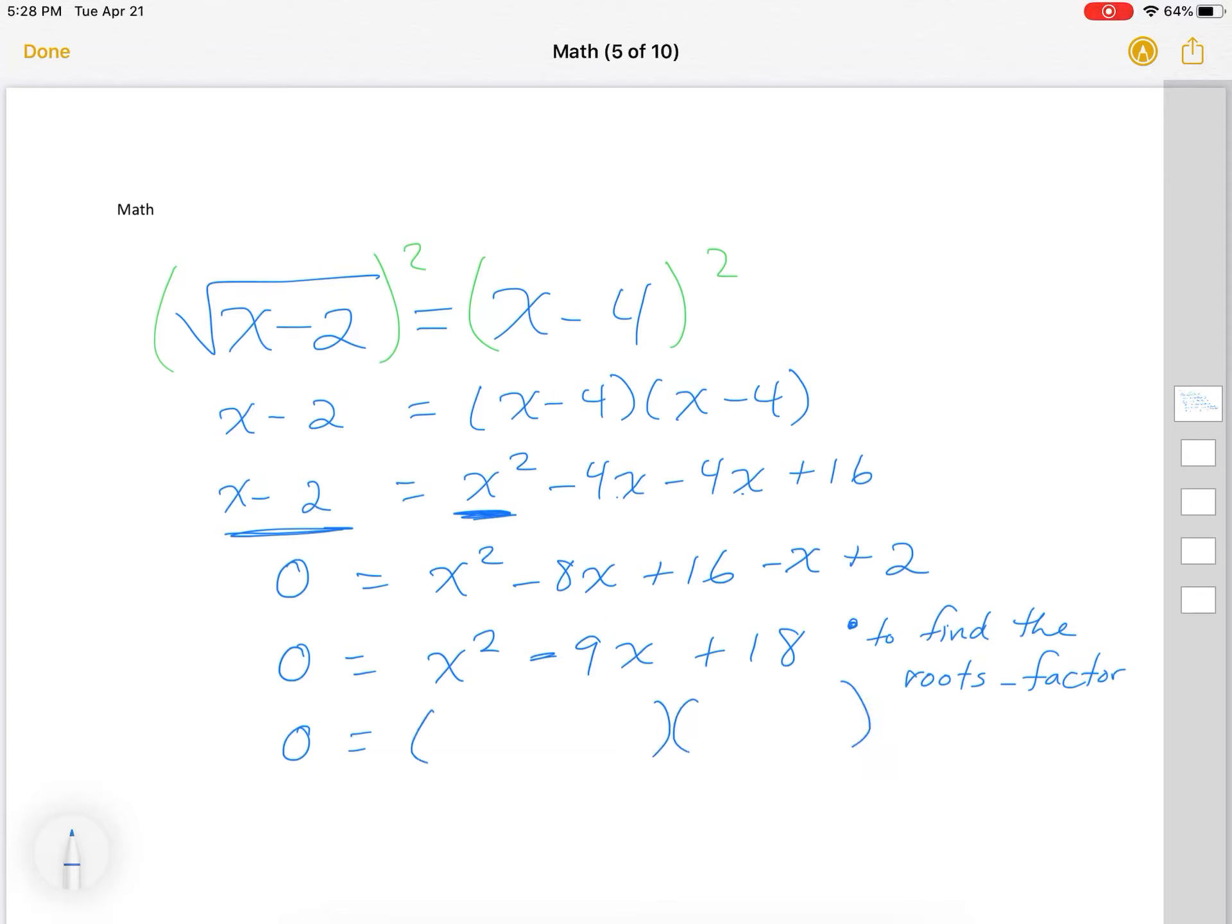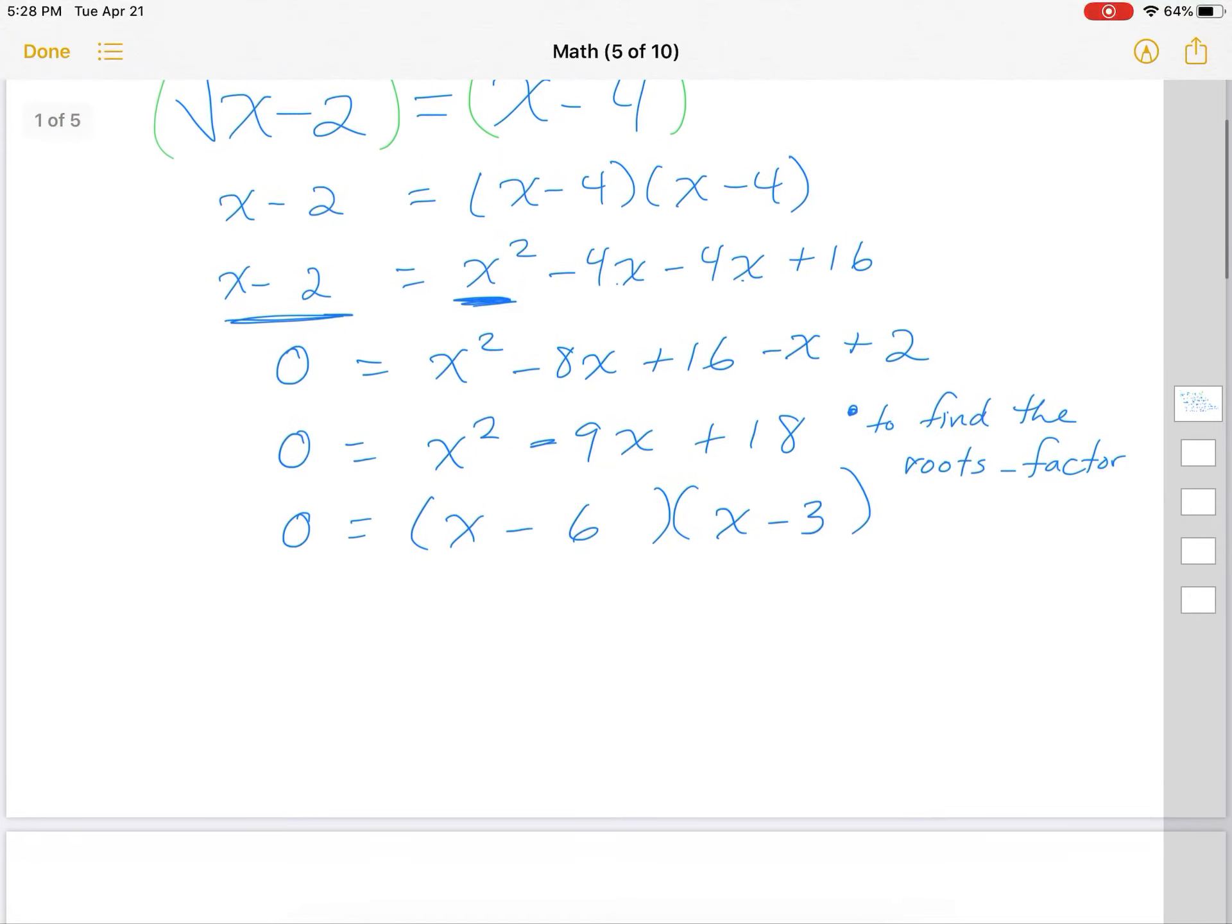So when I factor this, two numbers that multiply to give me positive 18 and add up to negative 9. So it's going to be x minus 6, x minus 3. So my roots are, can you close that door Gibson?